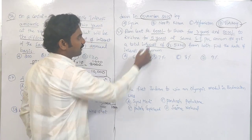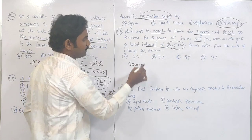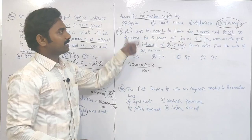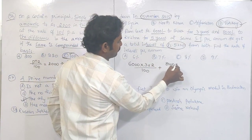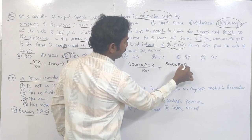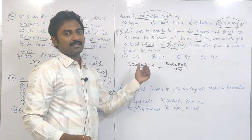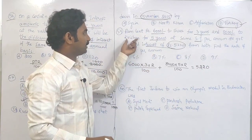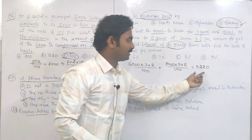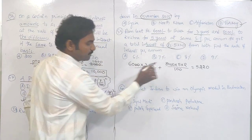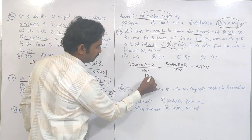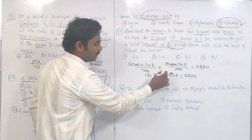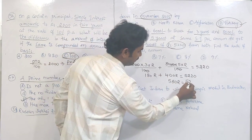The formula for interest is PTR/100. For the first: 6000 × 3 × R / 100. For the second: 8000 × 5 × R / 100. Rate of interest R is the same in both cases, and the total interest is 5,220 rupees. Cancelling the two zeros: 180R + 400R = 5,220. So 580R = 5,220.